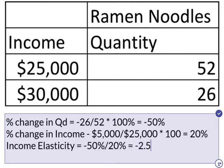What's the interpretation of that number? The negative sign tells us it is an inferior good. Whenever income and consumption of the good move in opposite directions, it's an inferior good — because normal goods behave differently; consumption and income move in the same direction. The absolute value of 2.5 is greater than 1, which means this is an income elastic good. The main lesson is that it's an inferior good, and this is how you calculate income elasticity.